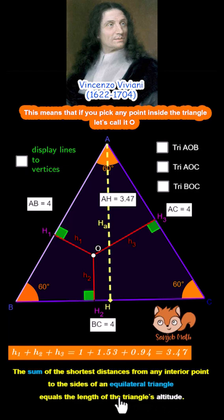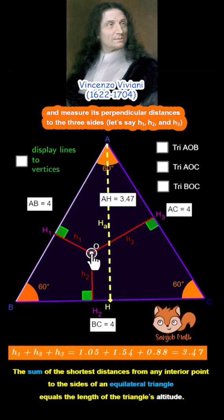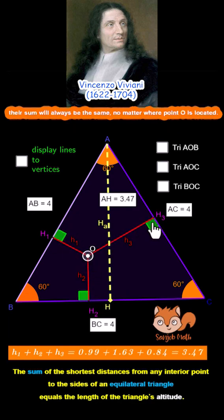This means that if you pick any point inside the triangle, let's call it O, and measure its perpendicular distances to the three sides, let's say H1, H2, and H3, their sum will always be the same, no matter where point O is located.